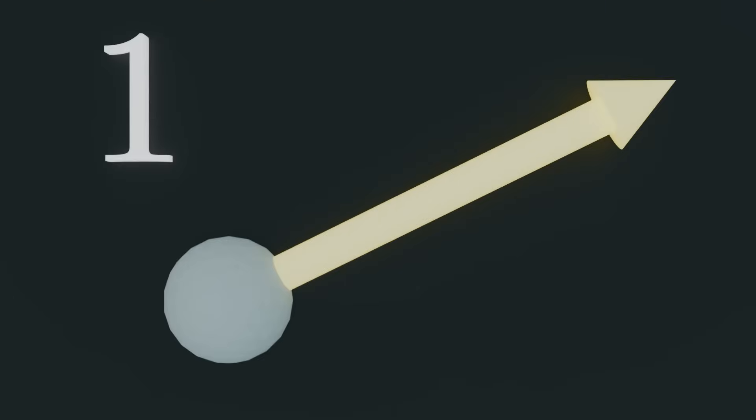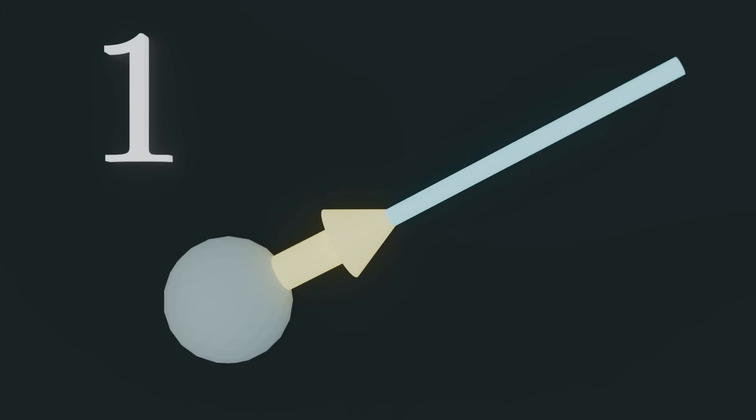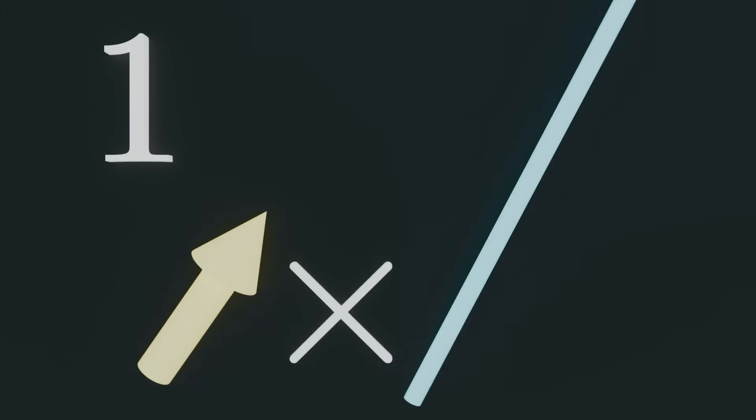There is one last constant remaining: the one. You might be saying, how could one be a constant? It's nothing like the others. But the truth is it's just a real number like any other. A simple example would be unit vectors. If you imagine a ball with some velocity, you can describe it with a vector. But we often describe the direction with a unit vector and the magnitude with speed. To get the original velocity you multiply them — but this only works if our vector has a length of one. If it were any longer or shorter, we'd have to scale it back.